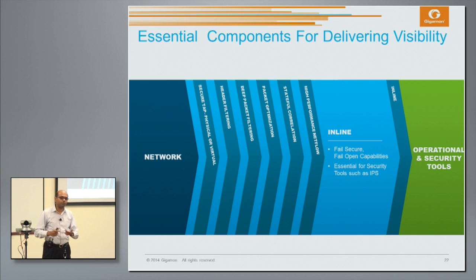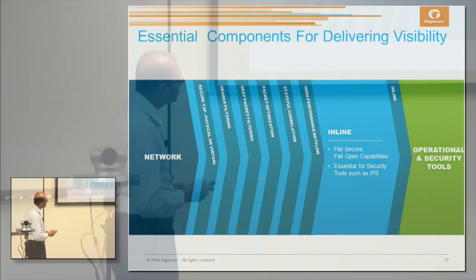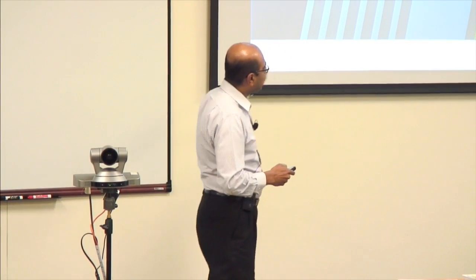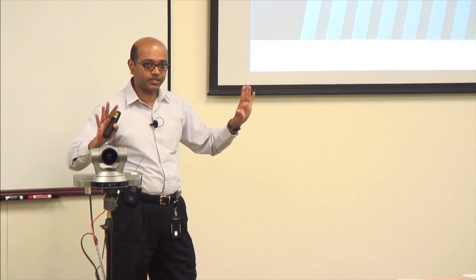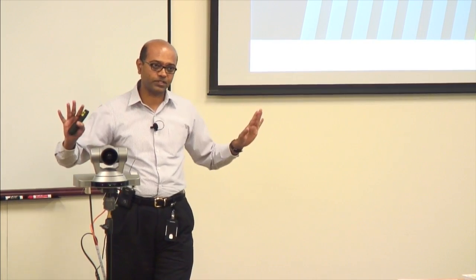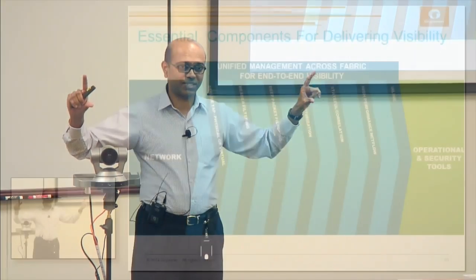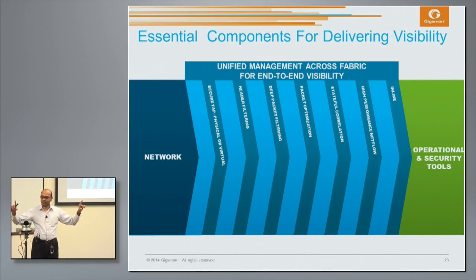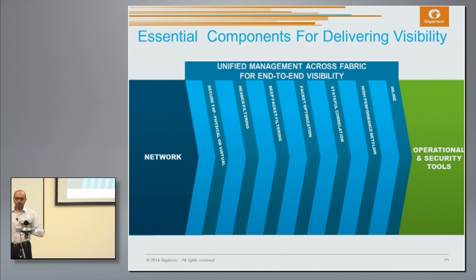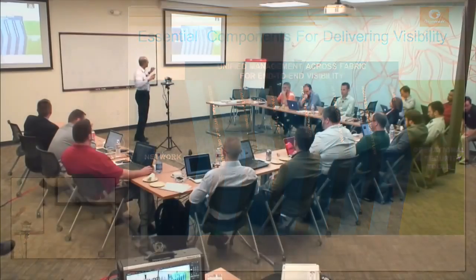Increasingly, more and more security devices — especially for threat detection and intrusion protection — are being deployed inline because of all the things we read in the news. These are the seven-stage steps I see as important. Once you've done all of these things, it's important to have a unified view across all of them in the visibility infrastructure, so you're not doing a box-by-box or node-by-node view — you have a uniform pane of glass across which you can view all of these things.